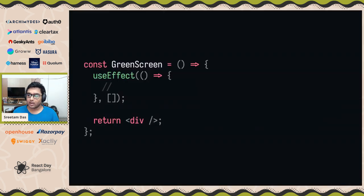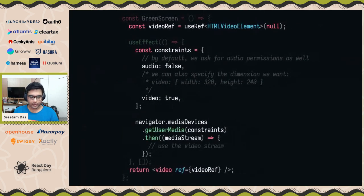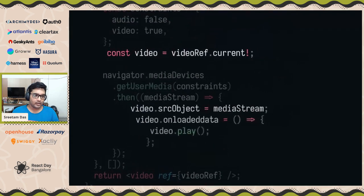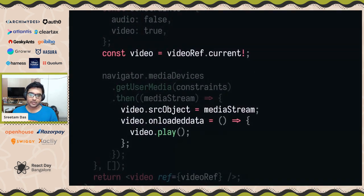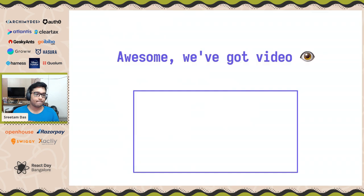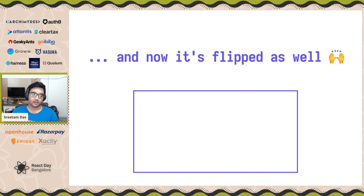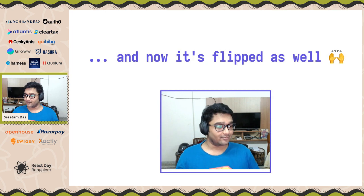Let's get to some code. Here's a very simple component. We're just going to add a video tag and attach a ref to it. Then we're going to define some constraints to get only the video part, because we don't really need audio. We'll call our function and get the media stream as a promise. We define the source object for the video as the incoming media stream, and once the video has loaded, we just play it. We already have some video — we're done with a big part of it.